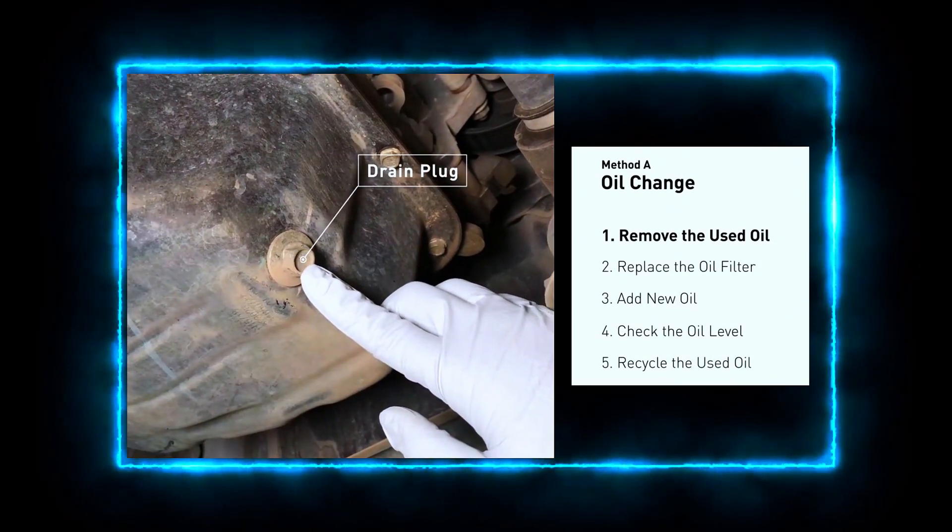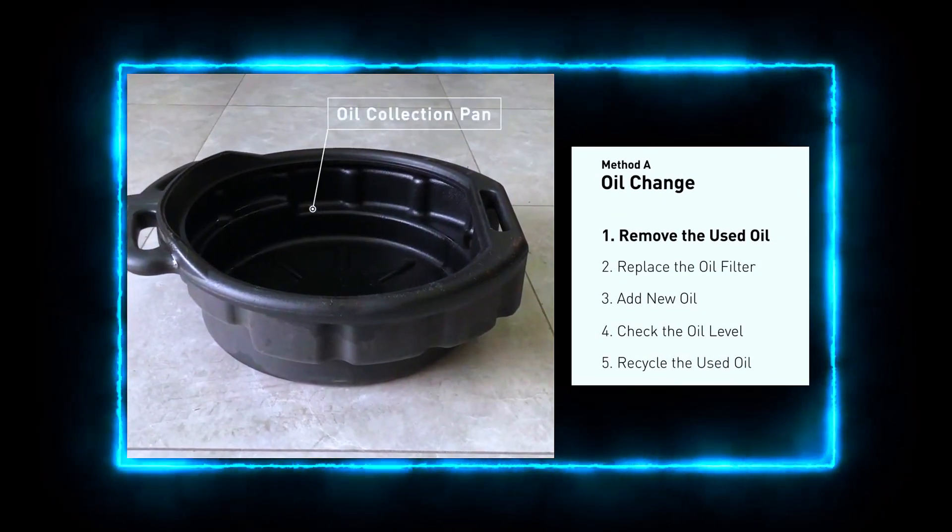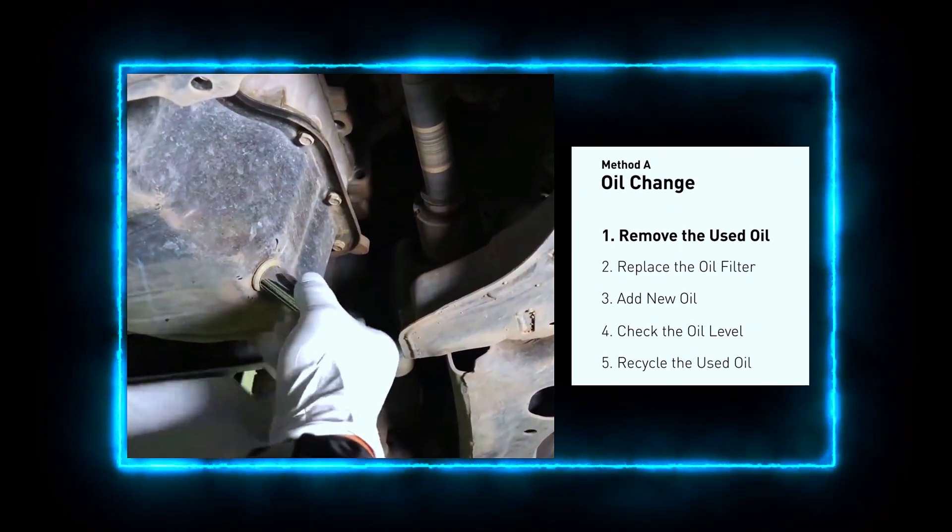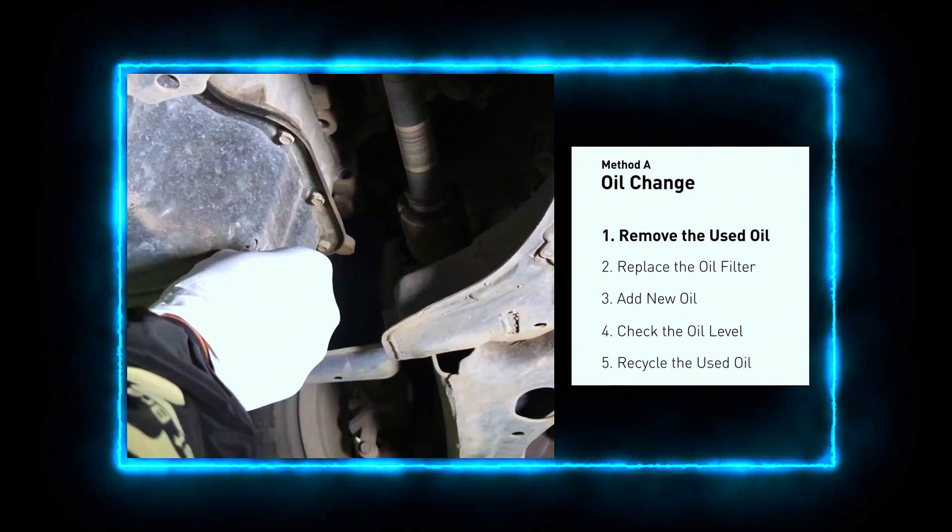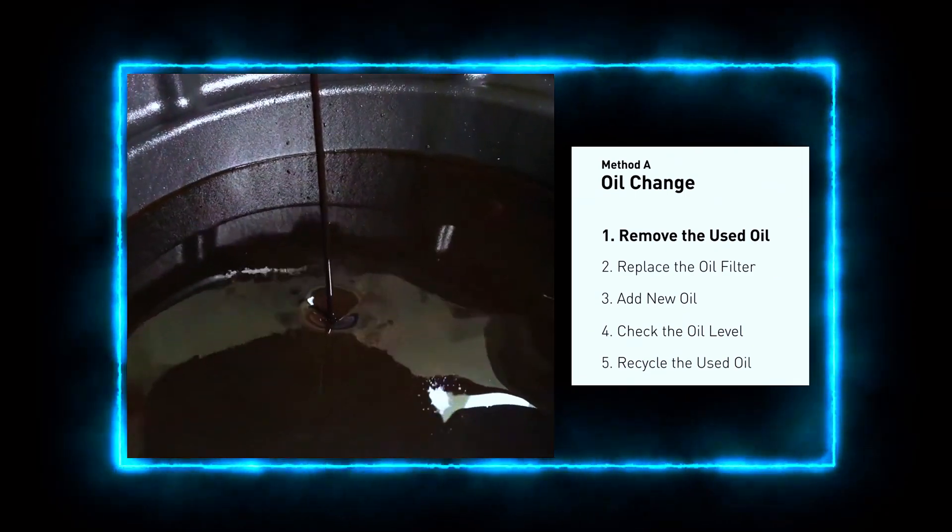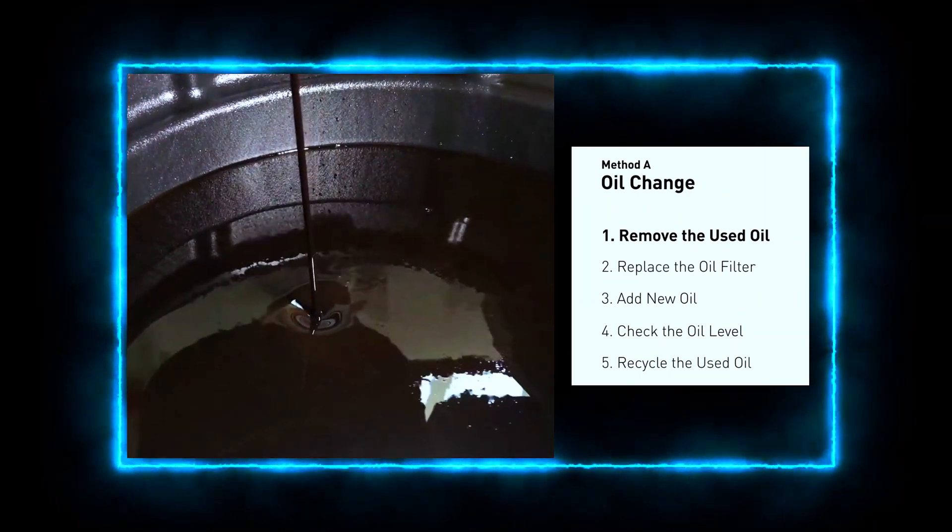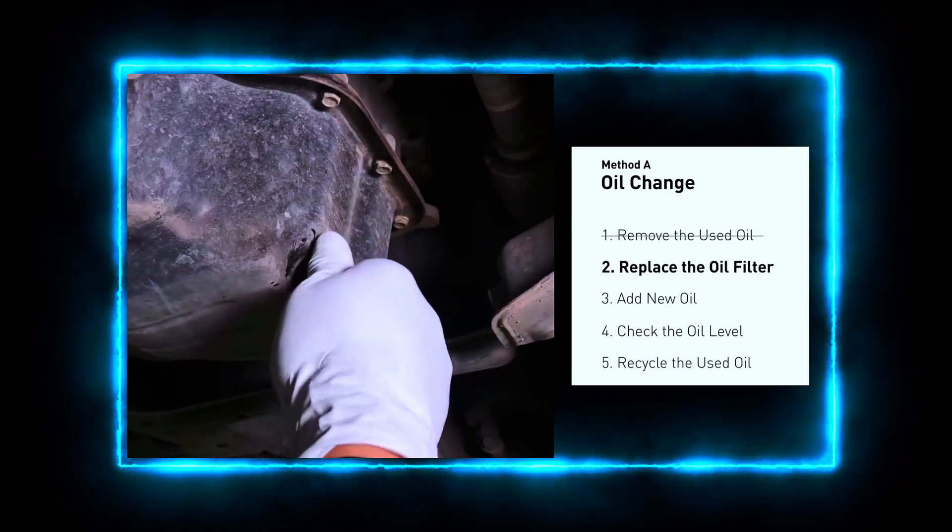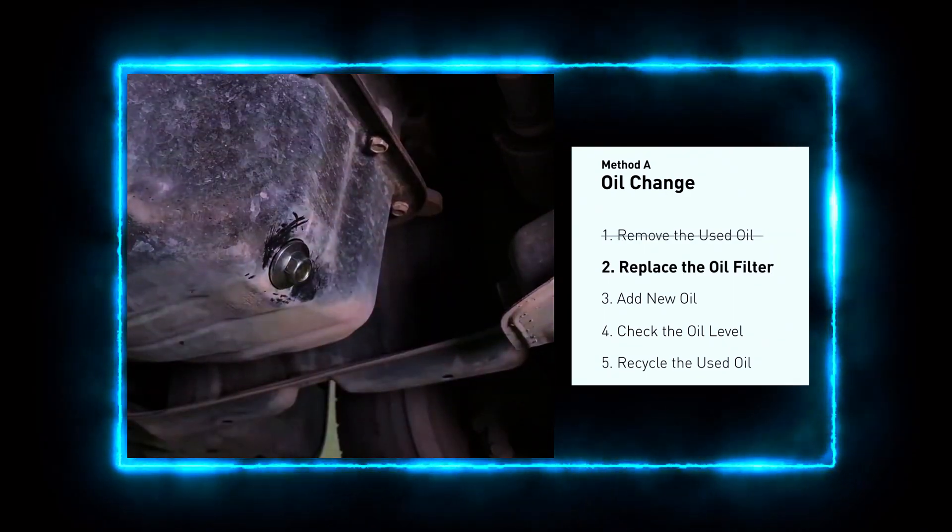Locate the oil drain plug. It's usually on the bottom of the engine. Use your socket set to loosen the plug. Place the oil drain pan underneath to catch the old oil. Carefully remove the drain plug and let the old oil drain completely. While the oil is draining, it's a good time to inspect the plug and washer for any signs of wear or damage.